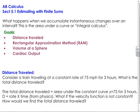In section 5.1, what happens when we accumulate instantaneous changes over an interval? In other words, the area under a curve. This is called integral calculus. Some of you have been in physics and talked about integrals. It's still not that bad. Our goals in this section are to understand distance traveled, use the rectangular approximation method — the author calls it RAM — and we have to go with it because that's the way the book is written.